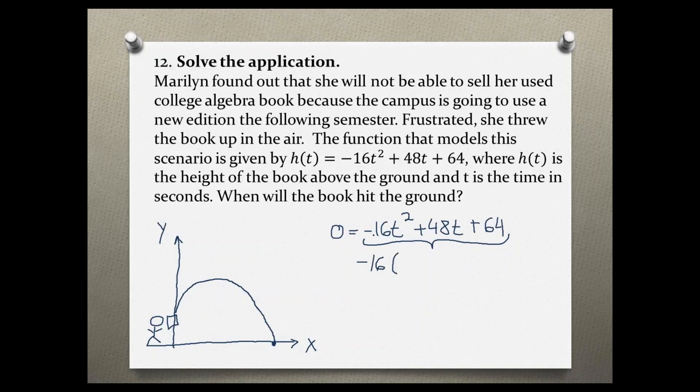And the reason why negative is because this squared term is always supposed to be positive. So to make this positive we're going to pull out a negative 16.